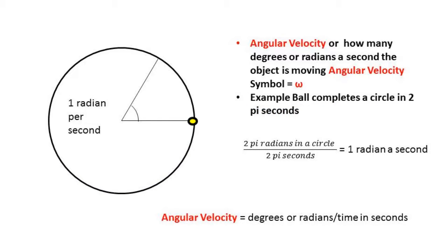The first term is angular velocity. Angular velocity is how many radians or degrees in a second the ball is moving. If the ball were to complete one circumference of a circle in 6.28 or 2 pi seconds, the ball would have an angular velocity of one radian a second. The way we calculate how many radians a second the ball is moving is by taking the number of radians and dividing by time.